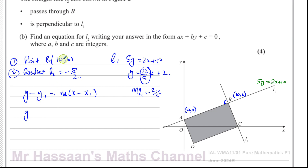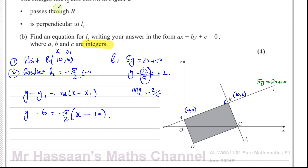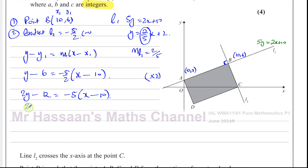Using y minus y1 equals m(x minus x1): substituting point B (10, 6) and gradient minus 5/2, we get y minus 6 equals minus 5/2 times (x minus 10). Multiplying both sides by 2 to eliminate the fraction: 2y minus 12 equals minus 5(x minus 10), which gives 2y minus 12 equals minus 5x plus 50.